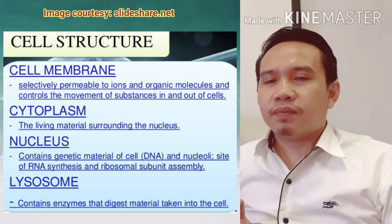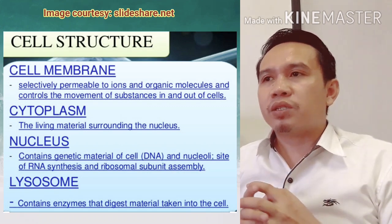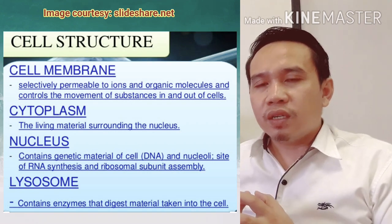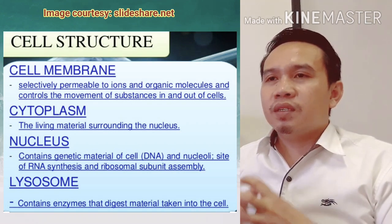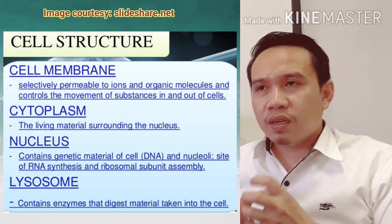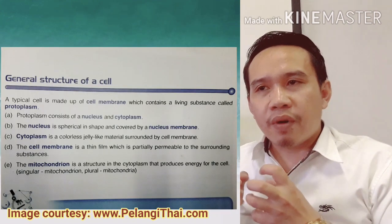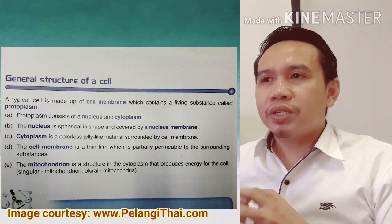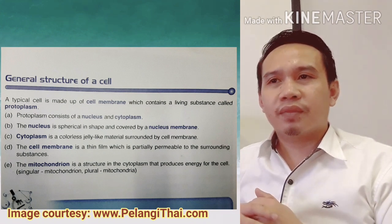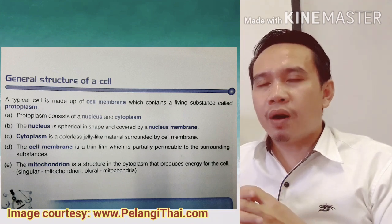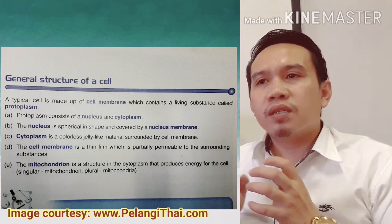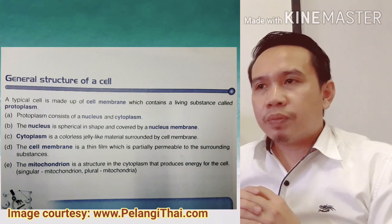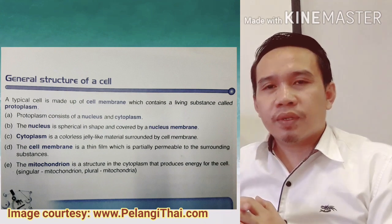Now let us move to the general structure of a cell. A typical cell is made up of a cell membrane which contains a living substance called protoplasm. Protoplasm consists of the nucleus and cytoplasm. The nucleus is spherical in shape and covered by a nuclear membrane. Cytoplasm is a colorless jelly-like material surrounded by the cell membrane. The cell membrane is a thin film which is partially permeable to the surroundings. The mitochondrion is a structure in the cytoplasm that produces energy for the cell.